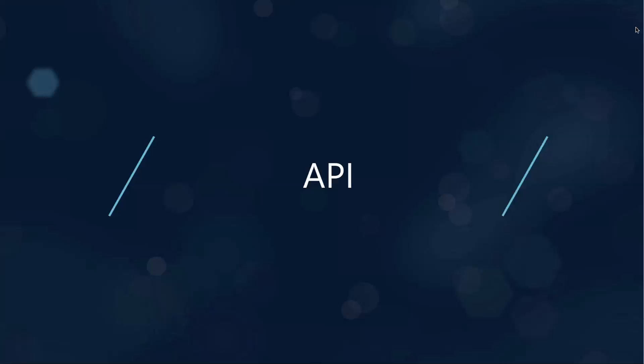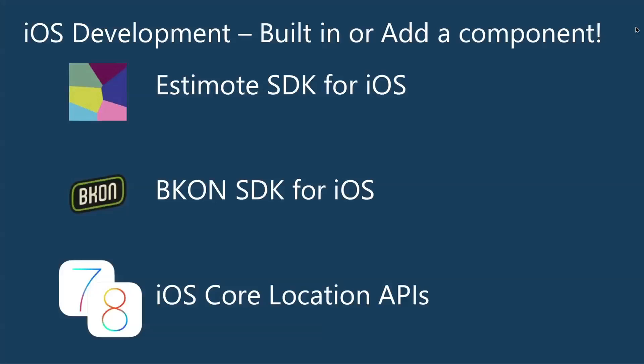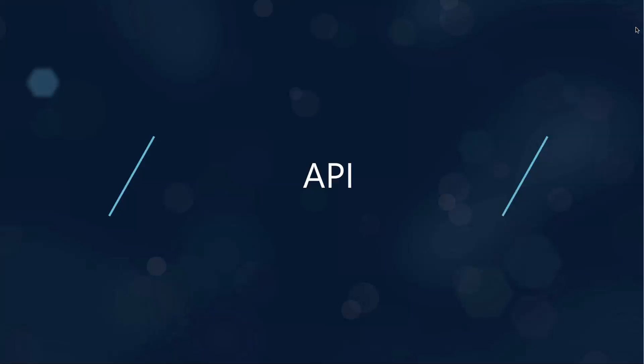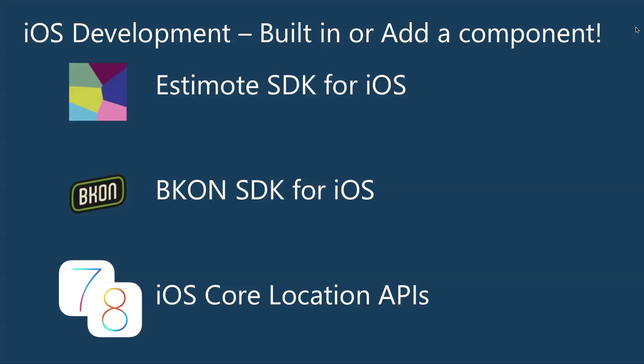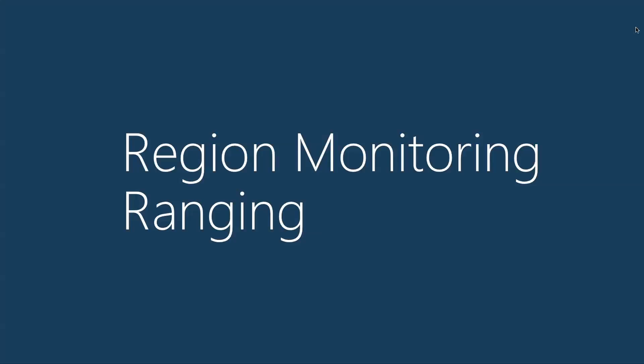The API couldn't be any easier for iOS and Android. In iOS, it's actually built right in — I'm going to show how to use core location built directly into iOS since iOS 7 and enhanced in iOS 8. There are also other SDKs out there from different vendors that add special pieces of functionality or remove some tedious work. From my knowledge, they're just using the same core location code under the hood and wrapping it for you.